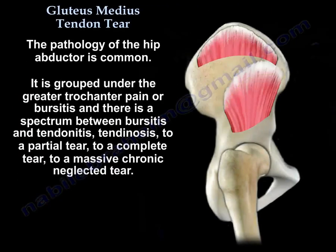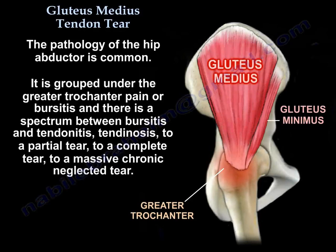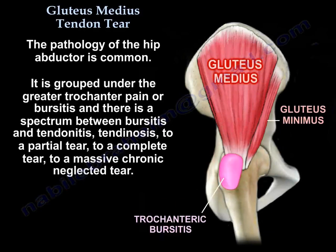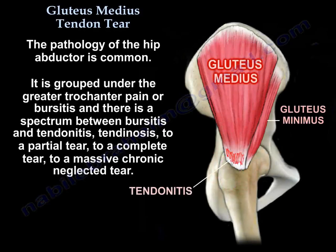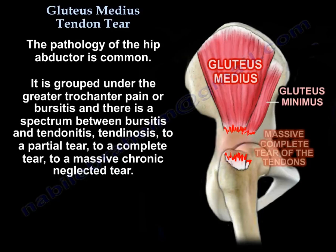The pathology of hip abductor is common, and it is grouped under the greater trochanter pain or bursitis. There is a spectrum between bursitis and tendinitis, tendinosis, to a partial tear, to a complete tear, to a massive chronic neglected tear.